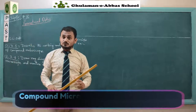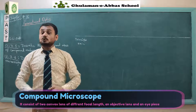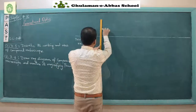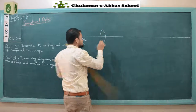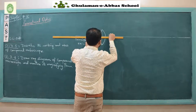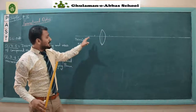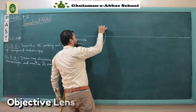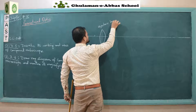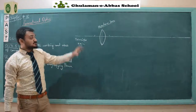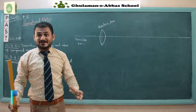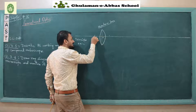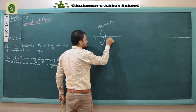Remember that inside the compound microscope, two lenses are used — both are convex lenses. So first we draw our first lens here. After drawing the principal axis, we draw a convex lens. This convex lens is called the objective lens, because the original object that we want to magnify is placed in front of this lens. We mark the optical center and the focal length of this lens — this is F₀.